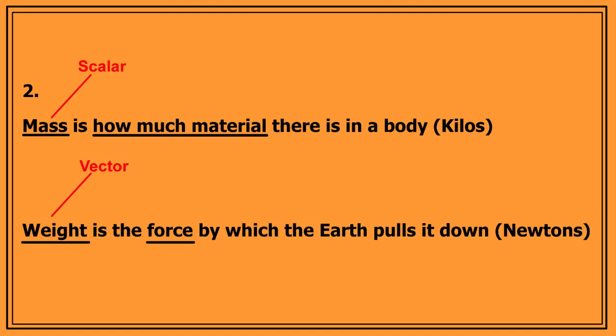Number two, mass is how much material there is in a body, whereas weight is the force by which the Earth pulls it down. So mass, measured in kilograms, is a scalar quantity, and weight, measured in newtons, is a vector quantity.